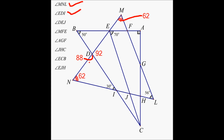Next is angle DEJ. I don't see a way of directly finding DEJ right away, but I think I can get to it. If this angle is 88, this angle has to be 88 as well — vertical angles. I am going to just put an arrow back to 88.